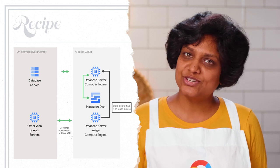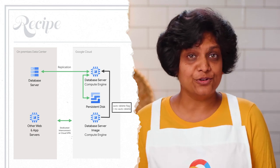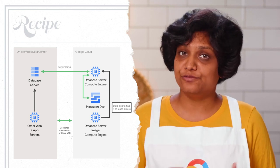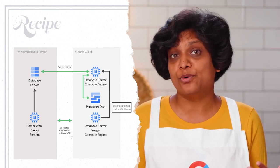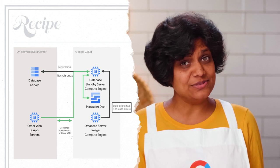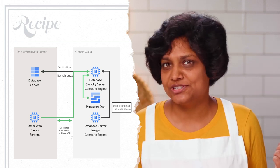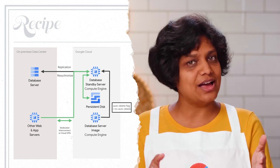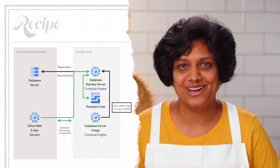Then configure replication between the on-premise database server and the target database server in Google Cloud. The clients are configured in normal operation to point to the database server on-premise. After configuring this replication topology, they would have to switch clients to point to the standby server running in the Google Cloud network. When the production database on-premise is up and running, they just resynchronize the production database server with the Google Cloud database server and then switch clients to point back to the production environment.